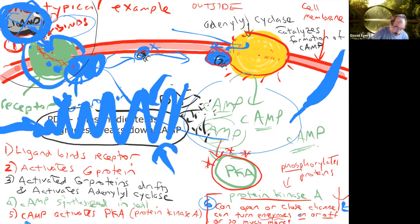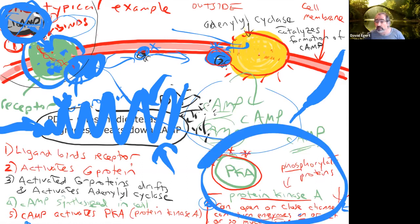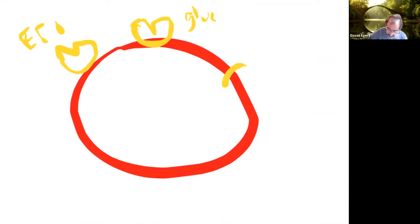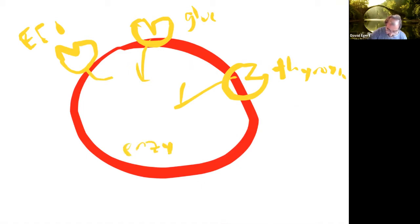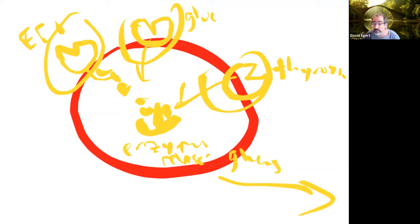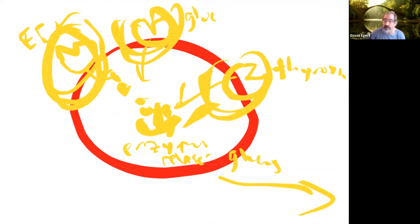You can have the same ligand binding the same receptor but have a different outcome depending on the cell's role in your body. Conversely, you can have a bunch of different receptors — for epinephrine, glucagon, thyroid hormone — that all ultimately turn on the same enzyme to release glucose into the bloodstream. It all depends on how you connect up the second messenger pathways.